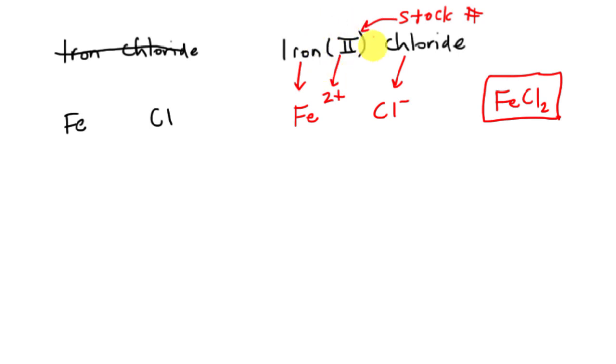And again, stock number, and this is what students get confused all the time. Stock number tells you the charge on the cation. It does not tell you, listen, it does not tell you how many ions. This does not mean you write Fe2Cl. It does not tell you how many. It tells you the charge on the ion.